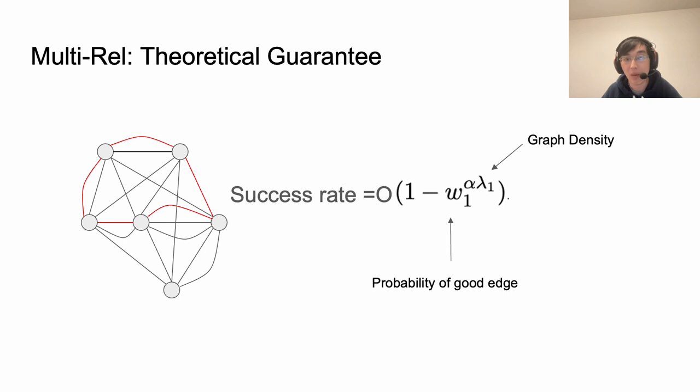Additionally we provide exact recovery condition for our method over the input graph. The success rate of our method is relative to the graph density and the probability of accurate edges from the input. Thanks for watching.